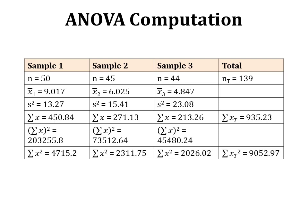The square of summation x for sample 1 is 450.84 squared = 203,255.8; for sample 2 it is 271.13 squared = 73,512.64; and for sample 3 it is 213.26 squared = 45,480.24. Then we have summation x square — which is the sum of squared individual observations — giving 4715.2 for sample 1, 2311.75 for sample 2, 2026.02 for sample 3, and a total of 9052.97.